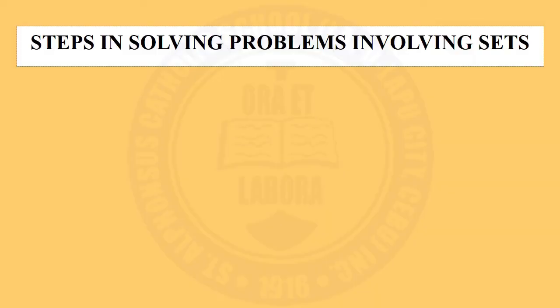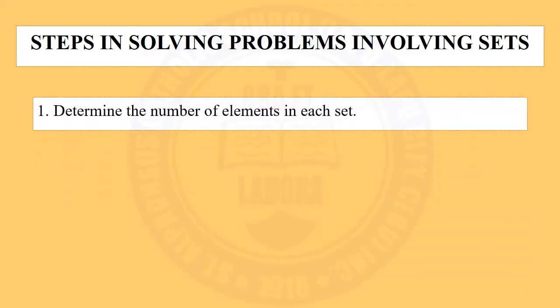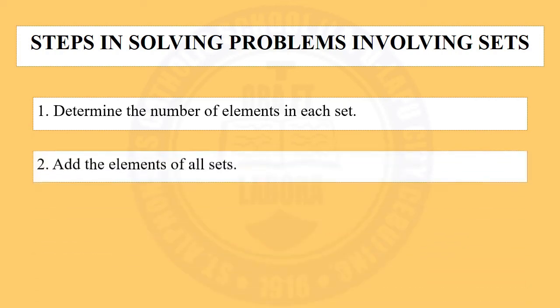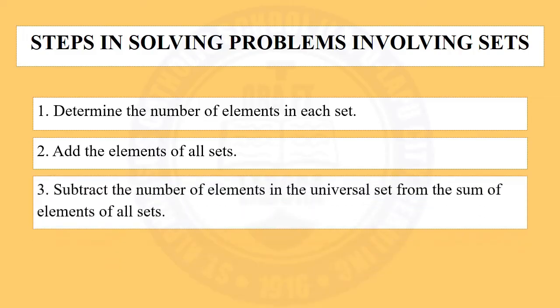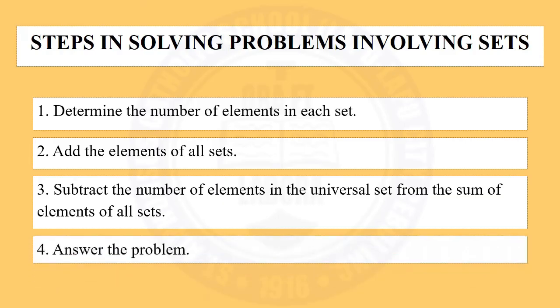These are the steps to follow to solve problems involving intersection of sets. Step 1: Determine the number of elements in each set. Step 2: Add the elements of all sets. Step 3: Subtract the number of elements in the universal set from the sum of elements of all sets. Step 4: Answer the problem.